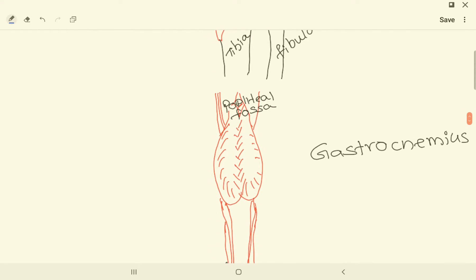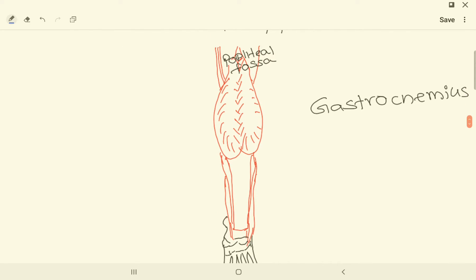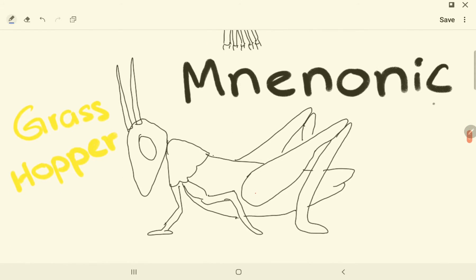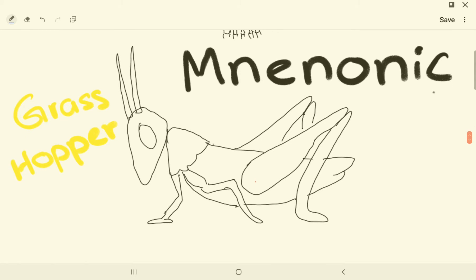Then we have gastrocnemius. This muscle is the gastrocnemius. Let's look at the mnemonic. You can see the mnemonic is grasshopper. If you think that this grasshopper is a man, here will be the hip joint and this will be the knee joint.